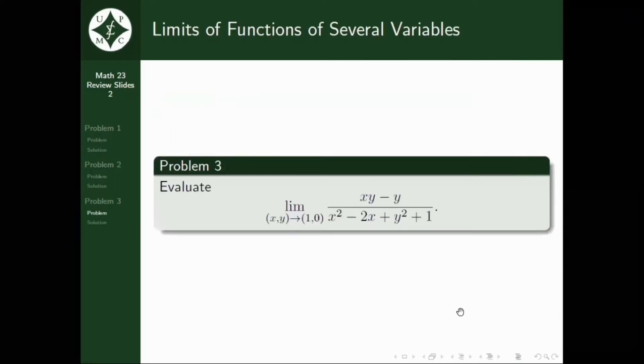Now, for the last item, we are asked to evaluate the limit of XY minus Y all over X squared minus 2X plus Y squared plus 1 as the ordered pair XY approaches (1, 0). So, ang ginagawa ko, from here, nakakita kasi ako ng square. Tapos, pwede rin akong makabuo ng perfect square trinomial from here. In particular, actually, nandiyan dyan yung constant term ng sinasabi kong perfect square trinomial. So, X squared minus 2X plus 1. So, further factoring, this, we will have the square of X minus 1.